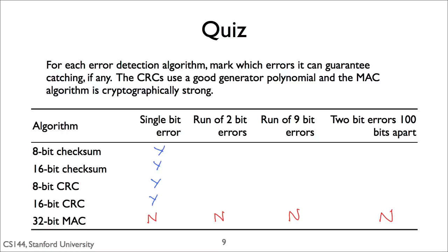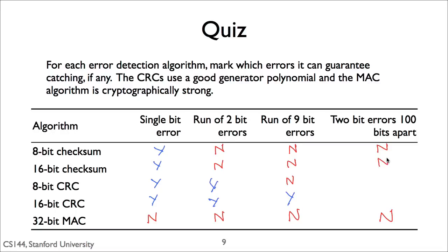How about 2-bit errors? Checksums can't guarantee detecting 2-bit errors, so no for both of them. CRCs, though, can guarantee detecting bit error runs less than or equal to the length of the CRC. Since 2 bits is shorter than both 8 bits and 16 bits, both CRCs can detect a run of 2-bit errors. Correspondingly, an 8-bit CRC can't guarantee detecting a run of 9-bit errors, but a 16-bit CRC can — so no for the 8-bit CRC and yes for the 16-bit CRC for 9-bit error runs.